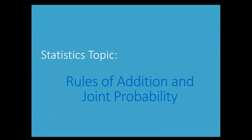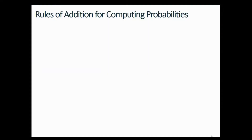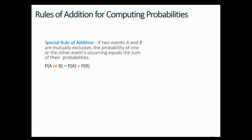Hello everybody and welcome to the statistics topic: rules of addition and joint probability. The rules of addition for computing probabilities are two. The first one is the special rule of addition, which is: if two events A and B are mutually exclusive, the probability of one or the other events occurring equals the sum of the probabilities — P(A or B) = P(A) + P(B).